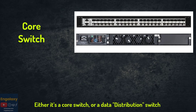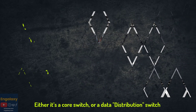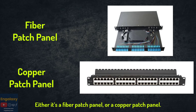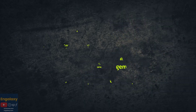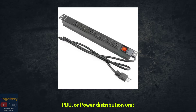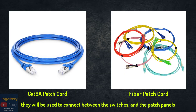Switches — either a core switch or a data switch. Patch panels — either a fiber patch panel or a copper patch panel. They can be vertical or horizontal, or both will exist in the rack. PDU, or power distribution unit. Patch cords, either for fiber or copper cables.